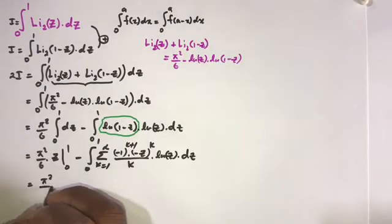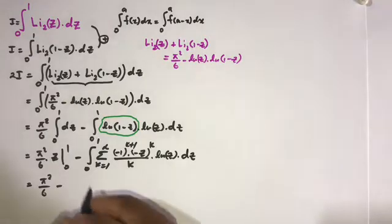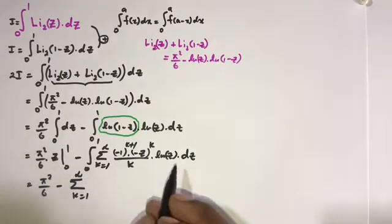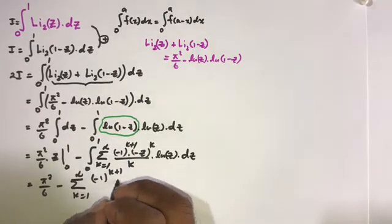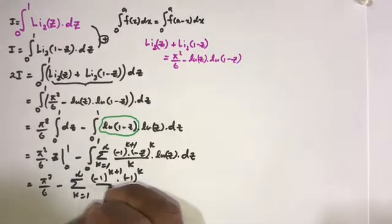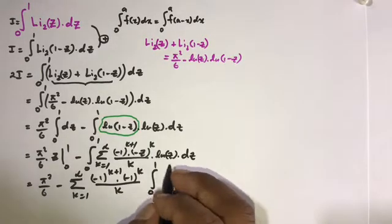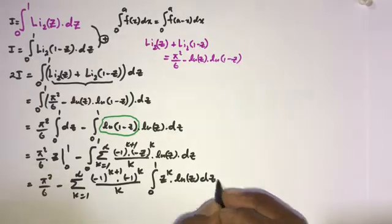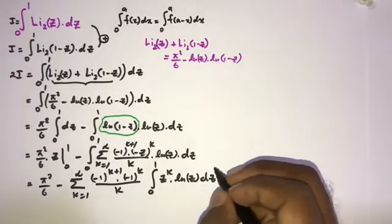This equals π²/6, then we write the sigma notation outside of the integral sign: the infinite sum from k equals 1 to infinity of (minus 1)^(k+1) times (minus 1)^k over k, times the integral from 0 to 1 of c^k times ln(c) dc.